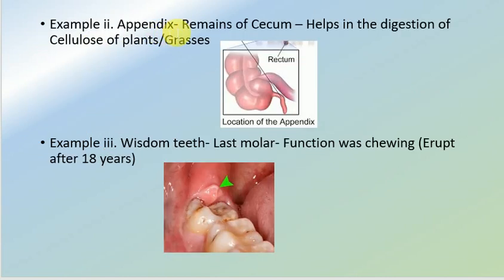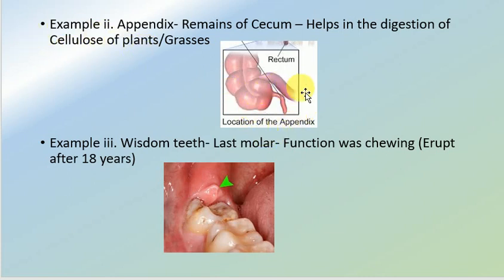The second example is the appendix, which is the remains of the cecum. The cecum originally performed the function of digesting cellulose. Nowadays, we do not consume as much cellulose, and we have certain enzymes that digest it, so a separate organ is no longer needed. The cecum disappeared over time, and the part that remains in the body is known as the appendix.